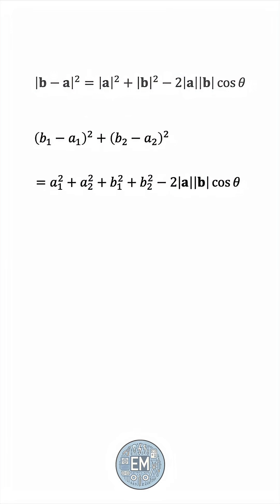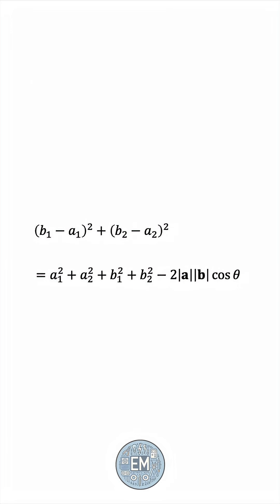So let's work with this equation now. We'll expand the two binomials on the left-hand side, giving us b1 squared minus 2a1b1 plus a1 squared, and the same thing for the second binomial. And after doing this, we see a lot of cancellations.